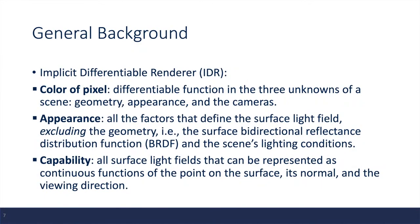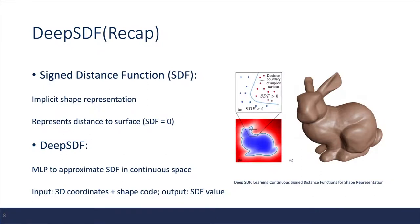This model is capable of representing all the surface light fields that can be represented as a continuous function of the point on the surface, its normal, and the viewing direction. This work employs the same implicit representation for the 3D surface as the Deep SDF paper. It represents the surface as the zero-level set of SDF.